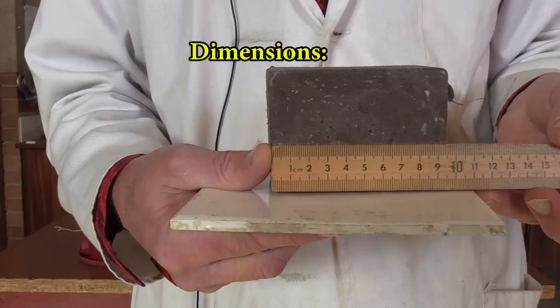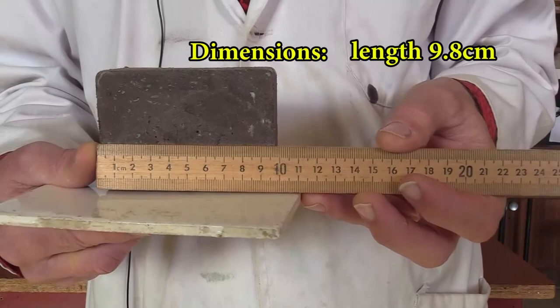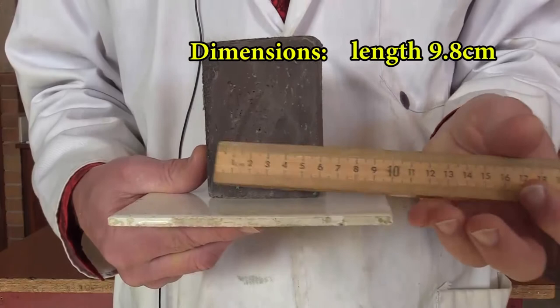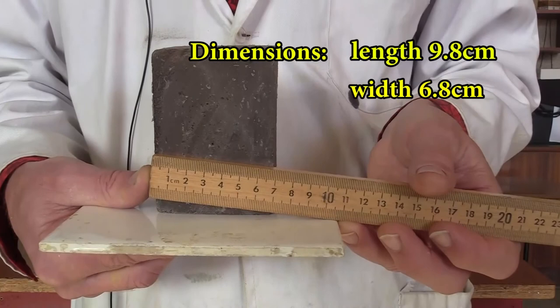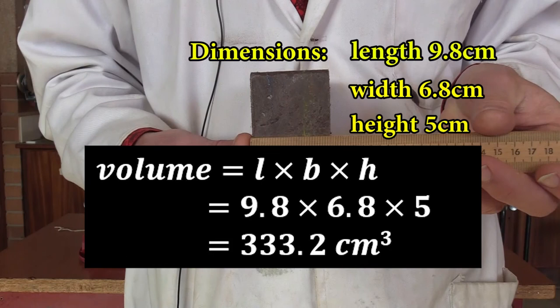Now the dimensions. 9.8 for the length. 6, 6.8 for the width. And the height is 5 centimeters. So the volume calculated is 333.2 cubic centimeters.